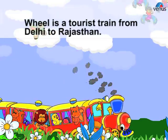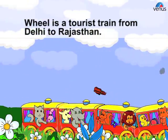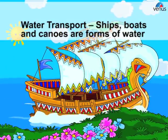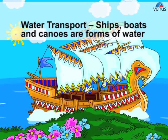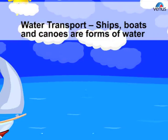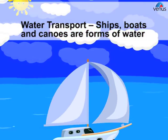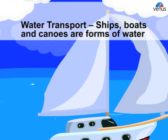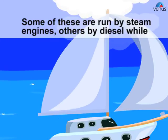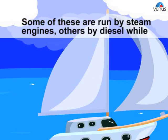The Rajdhani and Shatabdi are very fast trains, and the Palace on Wheels is a tourist train from Delhi to Rajasthan.